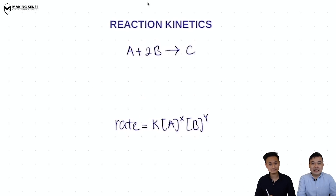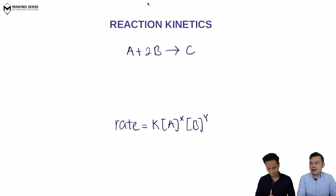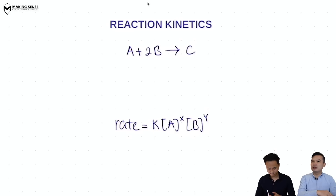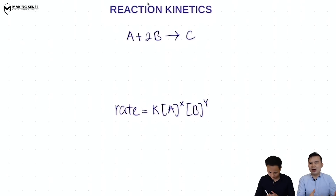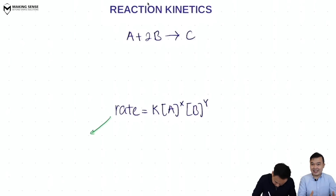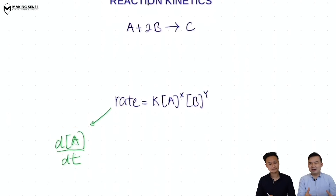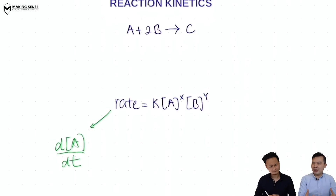Let's take a look at a typical generic reaction: A + 2B → C. If I want to look at how fast a reaction is, one way is to look at how fast the reactants are being consumed. Mathematically, we're going to look at the idea of differentiation — d[A]/dt, differentiating the concentration of A against time. This is a very mathematical concept.